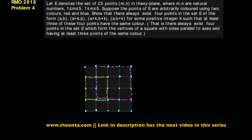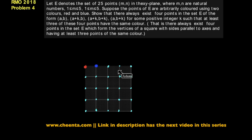We are colouring these 25 vertices in red and blue, and we can do as we wish. We can colour one in blue, one in red, and so on. Maybe I colour this one red and the next one blue. The choice is given to me — I am free to choose. But no matter how I choose, the problem claims we will always find a square whose at least three corner vertices are of the same colour.